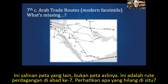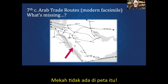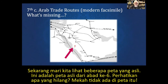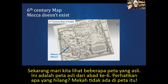Here's another one — another facsimile of trade routes in the seventh century. Notice what's missing: Mecca is not there. Now let's look at some real maps. This one is from the sixth century — notice what's missing.